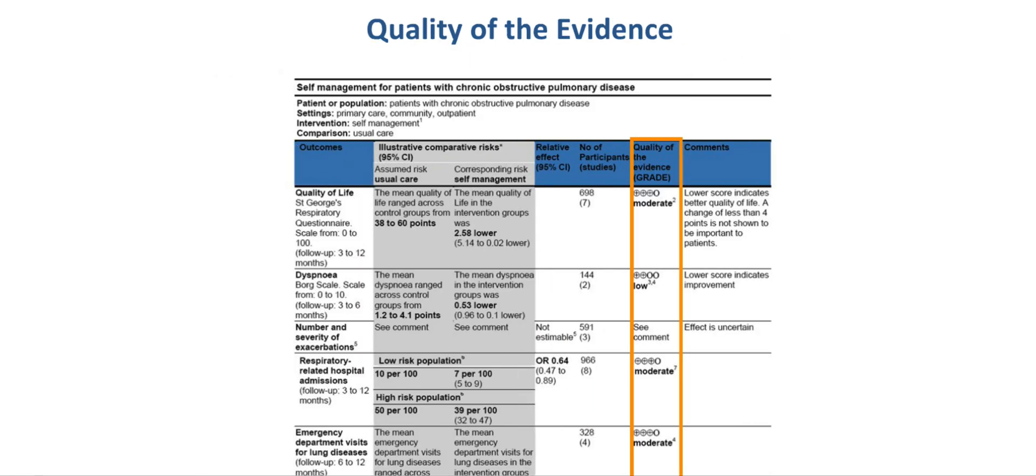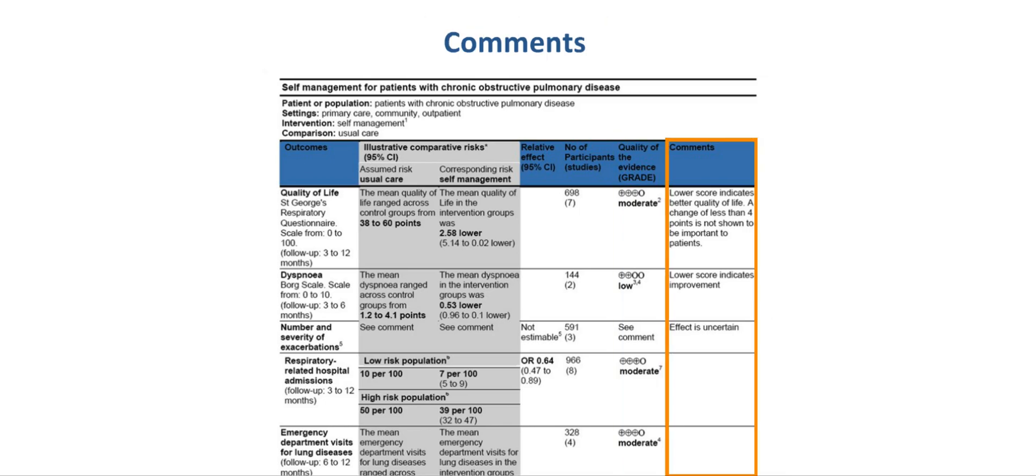The column entitled Quality of the Evidence, in parenthesis GRADE, describes the quality of the evidence related to the body of evidence for a specific outcome. For instance, it was moderate for quality of life and it was low for the outcome dyspnea. Finally, there is a comments column. It includes information that is important for understanding the information provided for each outcome or important additional information.